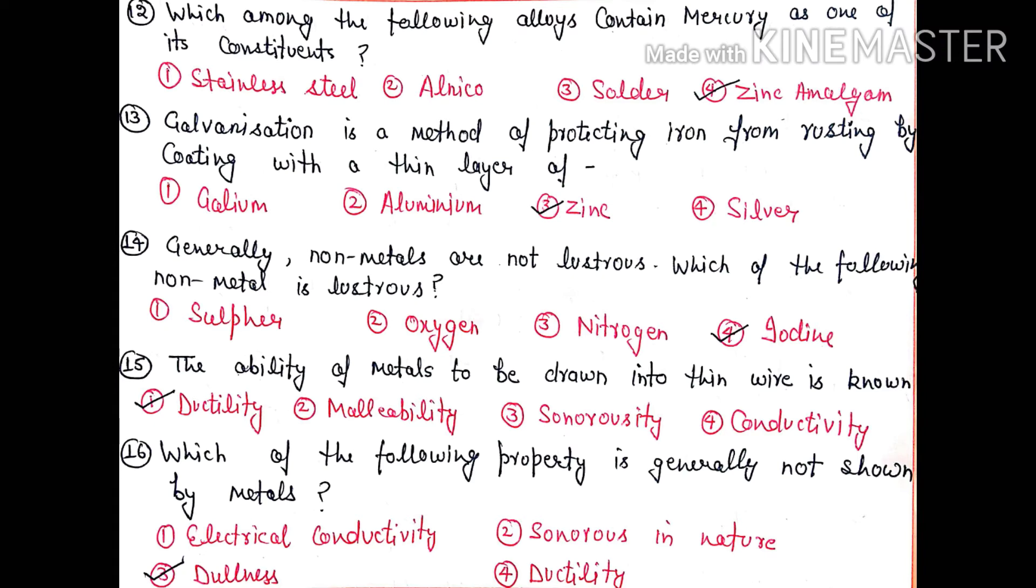Question 14: Which of the following non-metal is lustrous? Non-metals are generally not lustrous, but iodine is an exceptional non-metal which is lustrous, so option 4 is correct. Question 15: The ability of metal to be drawn into thin wire is known as ductility. This property is called ductility.